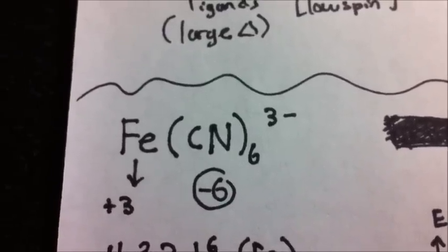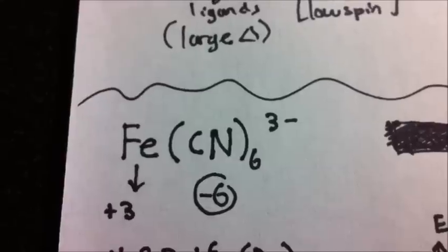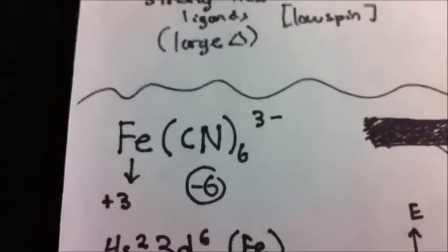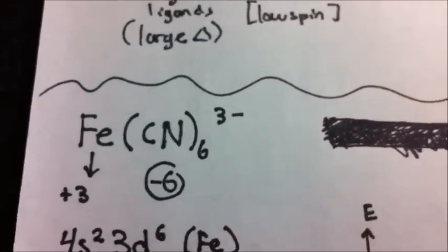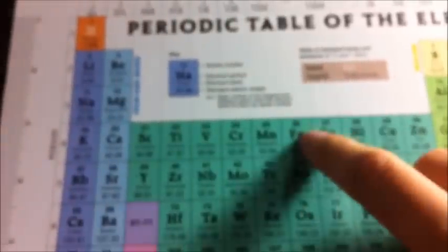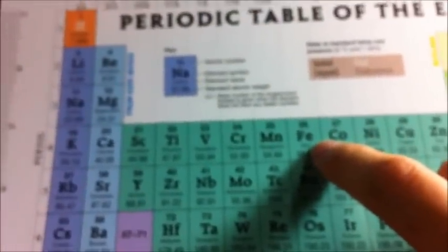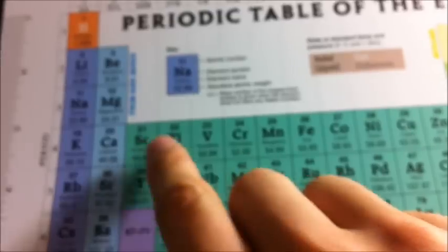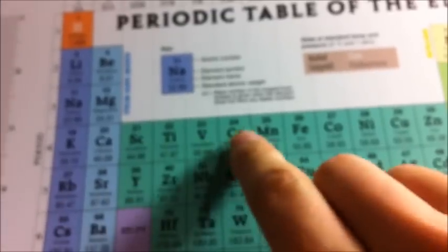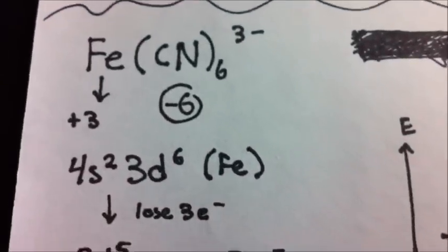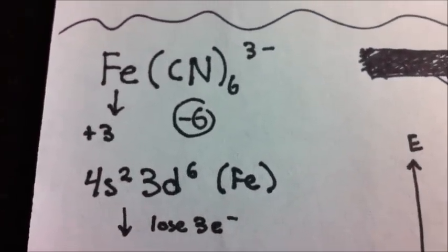Next, we look at the periodic table and find the electron configuration for our metal atom — not the ion, just the atom. Here is iron, and we can see that it's 4s², 3d¹, 2, 3, 4, 5, 6 — so 4s², 3d⁶ is going to be our electron configuration in question.